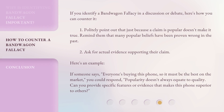If you identify a bandwagon fallacy in a discussion or debate, here's how you can counter it. 1. Politely point out that just because a claim is popular doesn't make it true. Remind them that many popular beliefs have been proven wrong in the past. 2. Ask for actual evidence supporting their claim. For example, if someone says 'everyone's buying this phone, so it must be the best on the market,' you could respond: 'Popularity doesn't always equate to quality. Can you provide specific features or evidence that makes this phone superior to others?'